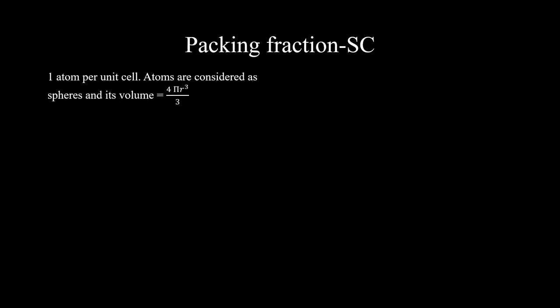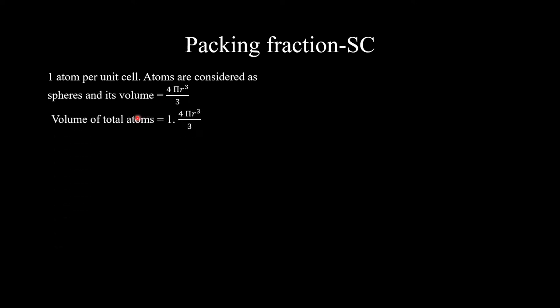Now let's calculate the packing fraction for a simple cubic structure. We look at how many atoms are present and what volume they occupy. In simple cubic, there is one atom per unit cell, so the volume of the total atoms will be one times (4π/3)r³.